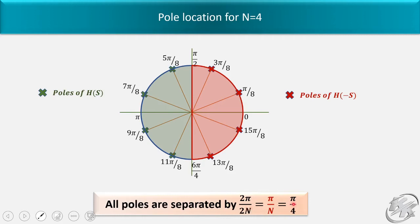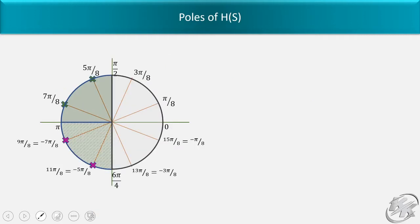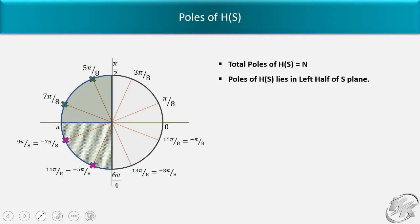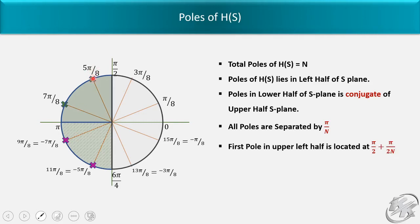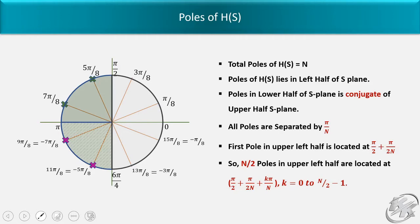Now for the poles of H(s), we consider only the left-hand side poles. The total number of poles of H(s) is n, and they lie in the left half of the s-plane. Poles in the lower half of the s-plane are conjugates of those in the upper half. All poles are separated by π/n. The first pole in the upper left half is located at π/2 plus π/(2n). So in the upper left half, all n/2 poles are located at π/2 + π/(2n) + kπ/n, where k equals 0 to n/2 minus 1.